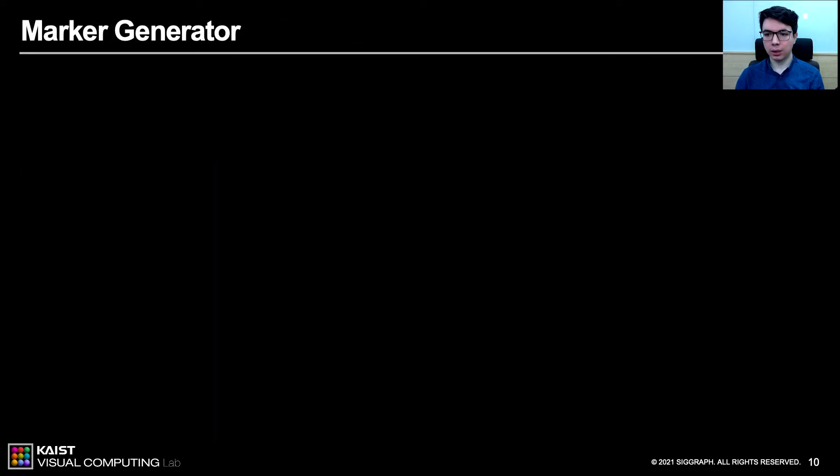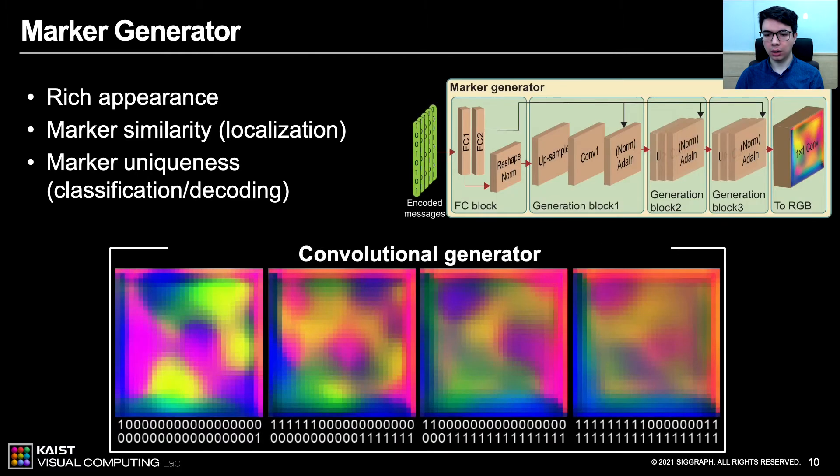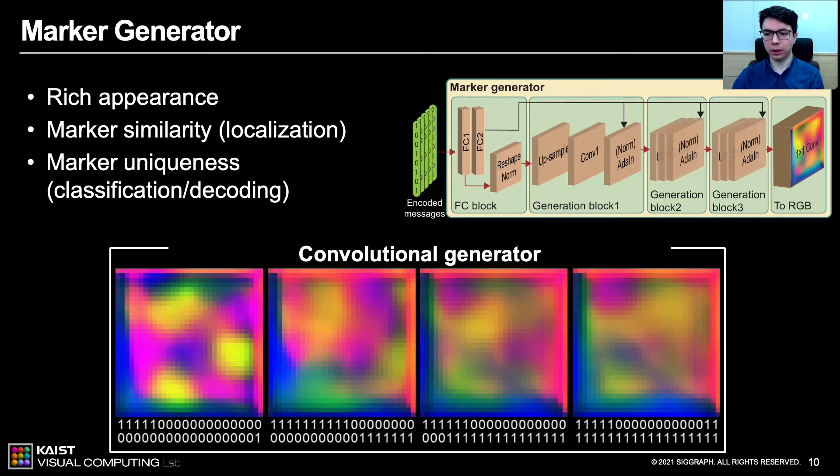There are several challenges and trade-offs associated with the marker generation task. First of all, markers should contain a rich variety of appearance to be able to encode and decode large number of messages. Second, they should look similar among themselves to be able to detect and localized easily. And finally, they should all have unique appearance to be distinguished as different markers. To solve these issues, we use convolutional marker generators.